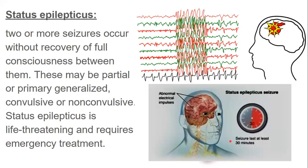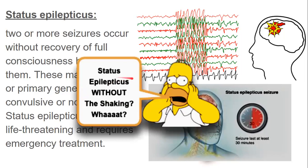Status epilepticus is the most serious and alarming epileptic attack. Two or more seizures occur in succession, usually extending beyond five minutes and lasting around 30 minutes. It may be partial, primary generalized, convulsive, or non-convulsive. Status epilepticus is life-threatening and requires emergency treatment. A non-convulsive status epilepticus — with no shaking — is especially dangerous as it may go unnoticed. Please be observant of people around you and take care.